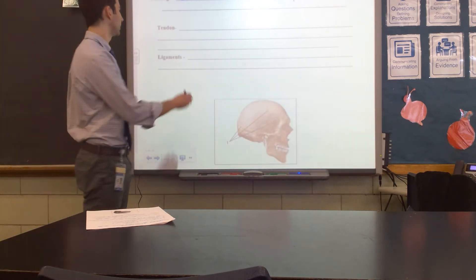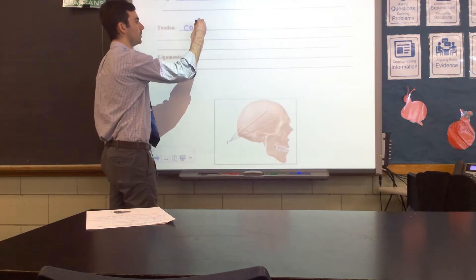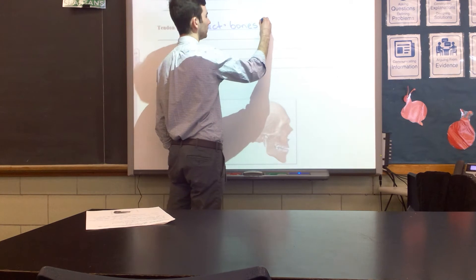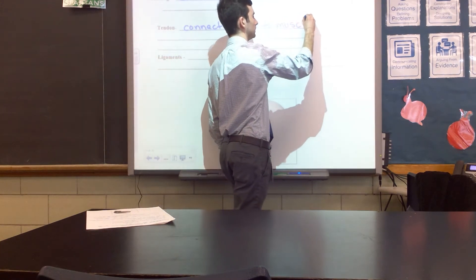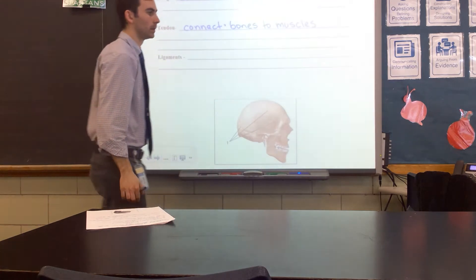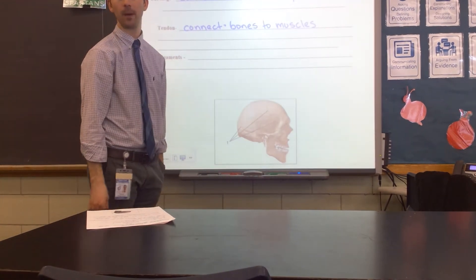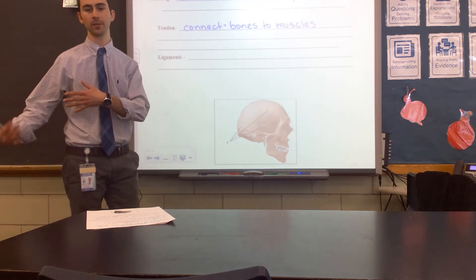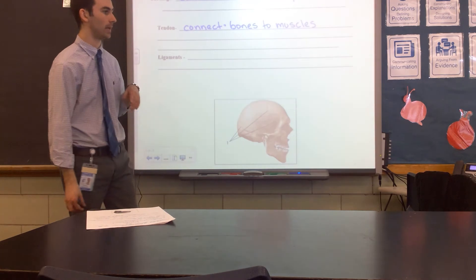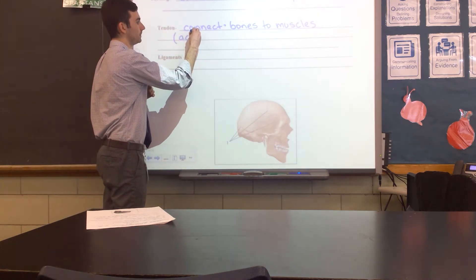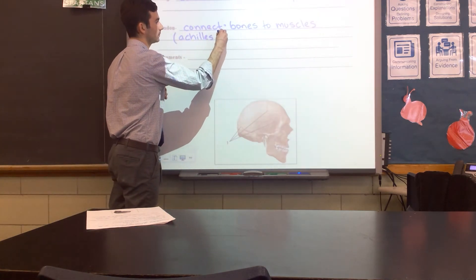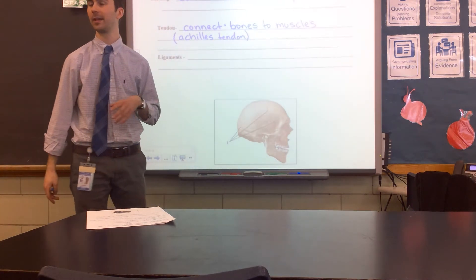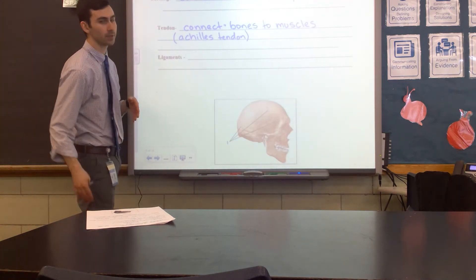Next, we have tendons. Tendons connect bones to muscles. Muscles are necessary for movement or locomotion, and in order for bones and muscles to work together, they have to be connected — that's what tendons do. You may have heard of your Achilles tendon, which is found in your heel and connects the bones in your heel to the muscles in your leg.